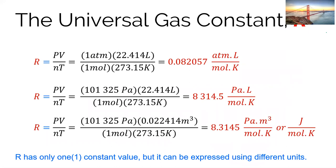The value of R depends on the units used. If pressure is in atmospheres and volume is in liters, R = 0.082057 L·atm/mol·K. If pressure is in Pascals and volume in liters, R = 8304.5 Pa·L/mol·K. If pressure is in Pascals and volume in cubic meters, then Pascals × cubic meters = Joules, so R = 8.314 J/mol·K. Always use the R value consistent with your units.